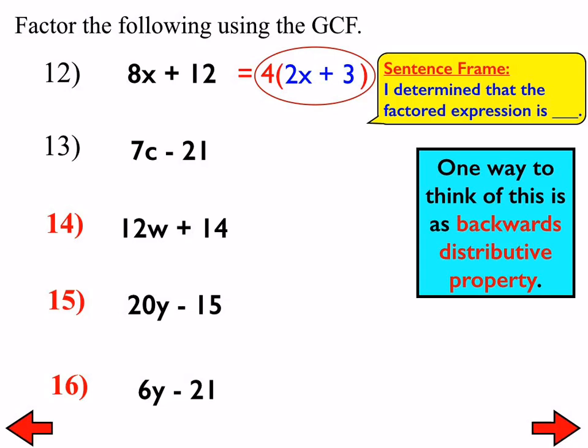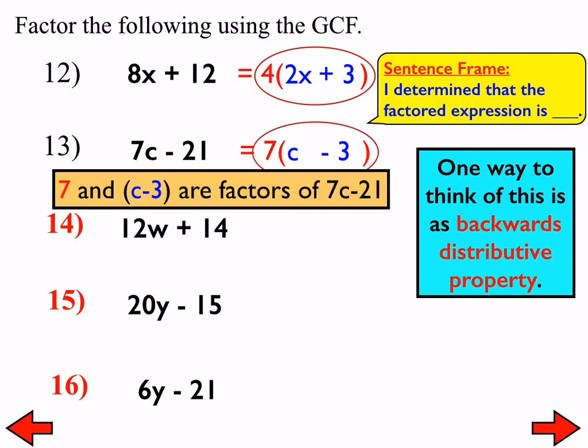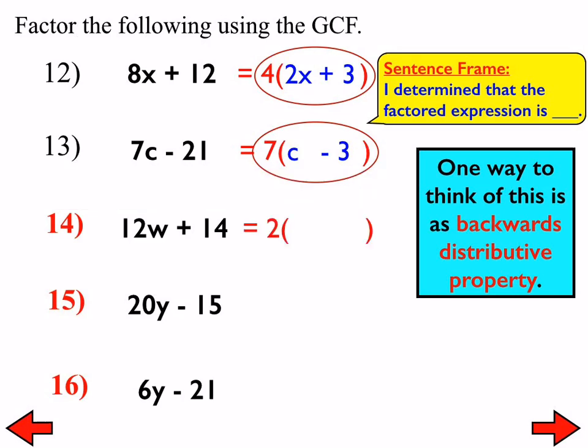All right. So, let's go through these. I like that most of you were stating your answers correctly. Like, for example, number 12. I determined that the factored expression is 4 times the quantity of 2x plus 3. And, at number 13, I determined that the factored expression is 7 times the quantity of C minus 3. And, at number 14, we should end up with 2 times the quantity of 6w plus 7.